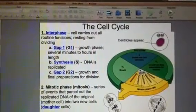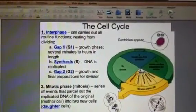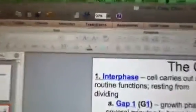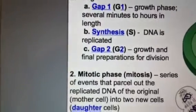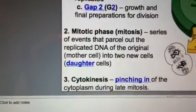You can think of the cell cycle overall as basically three phases: interphase, number 2, mitosis, and number 3, cytokinesis.